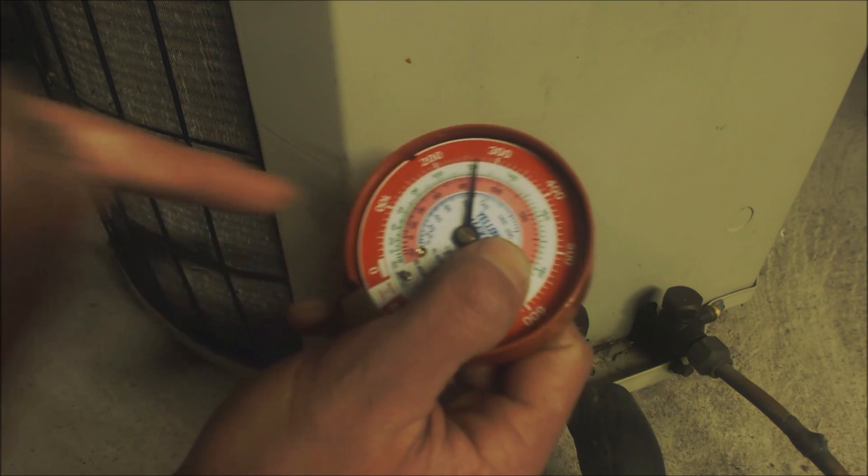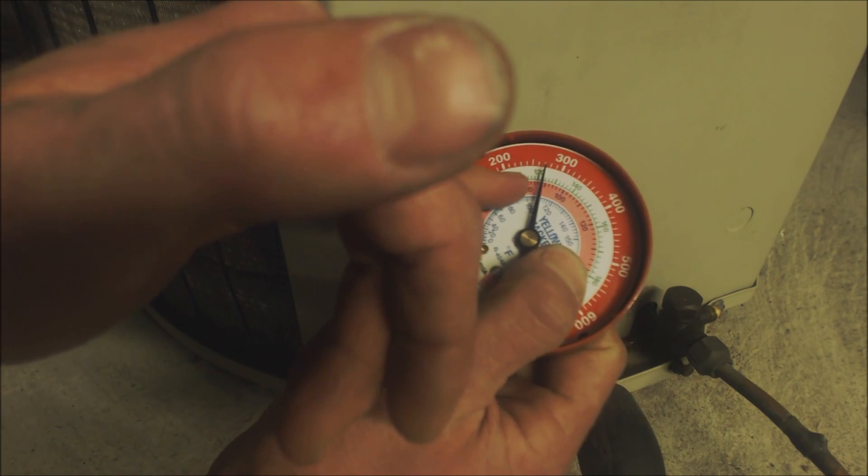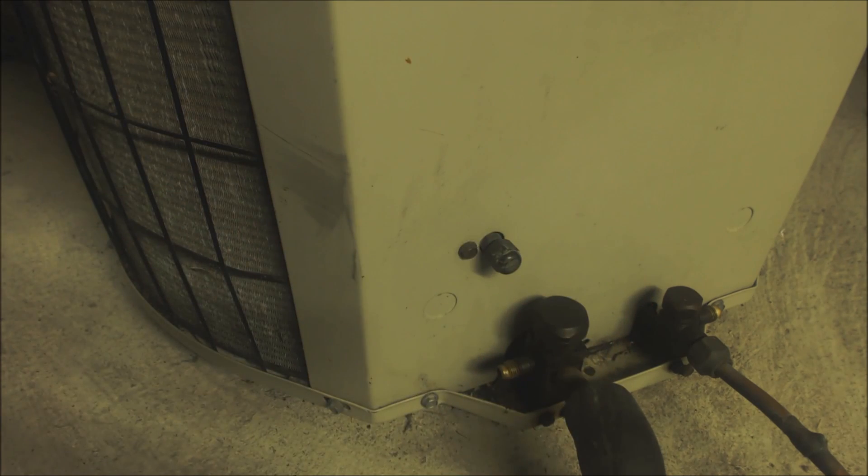If you have an R410A system, which is light pink, you might have a Puron or Suva sticker or R410A sticker somewhere else on that outdoor unit. So that's a couple ways to tell.